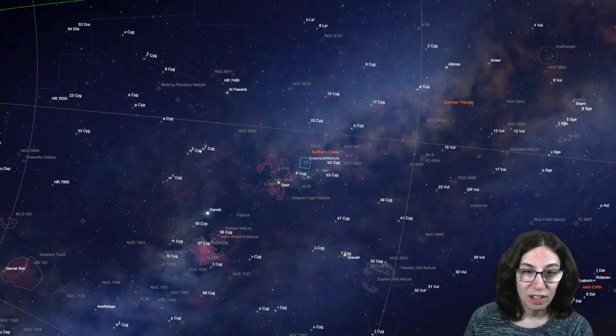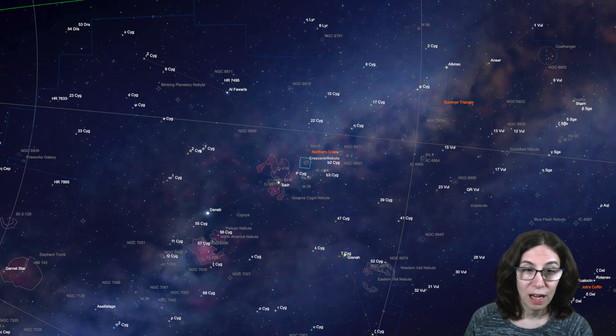It's also known as the Euro Sign Nebula because it resembles the euro currency symbol. It's in prime observing position for Northern Hemisphere viewers in late summer and early fall, with a declination of 38 degrees north.